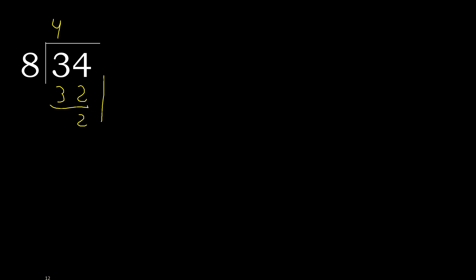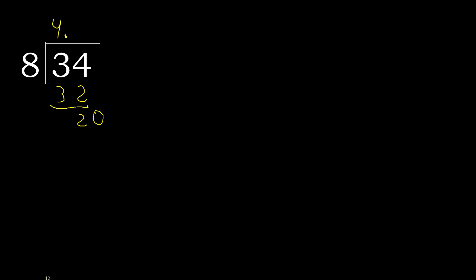Next — there is no number, therefore always complete with 0. Here, add a decimal point: 0 point. We now have 20. 8 multiplied by 3 is greater. 8 multiplied by 2 is 16, which is not greater. Subtract: 20 minus 16 equals 4.